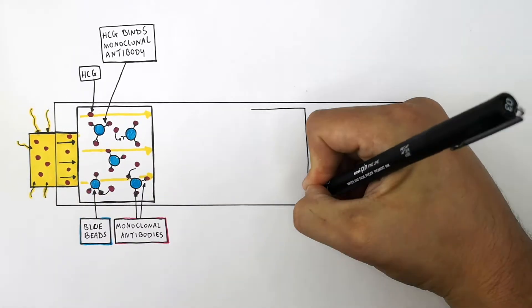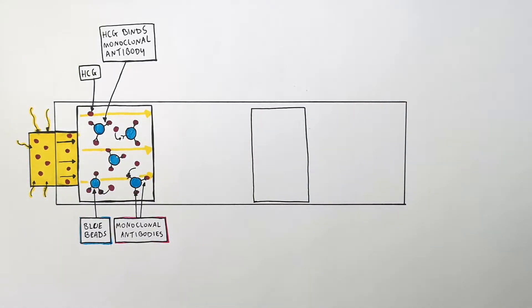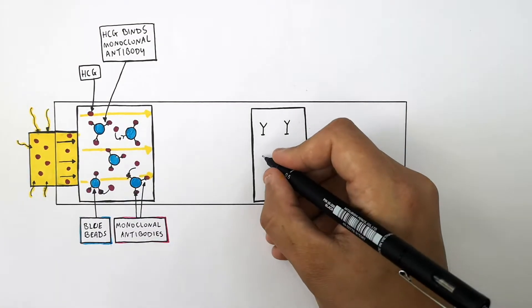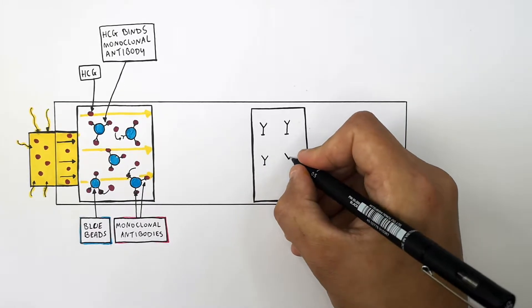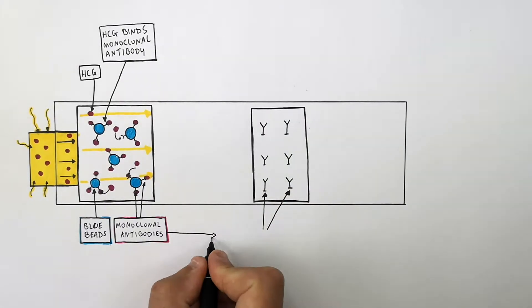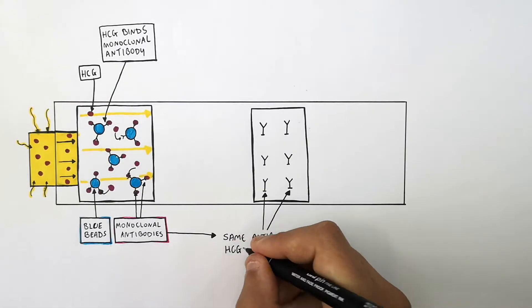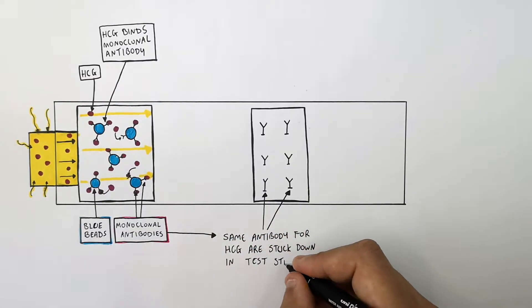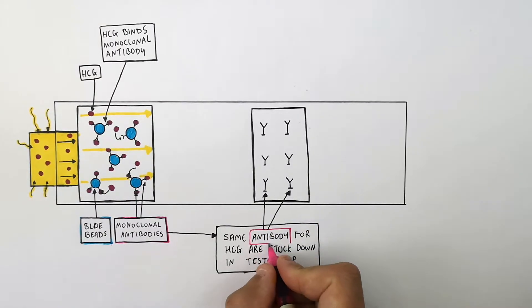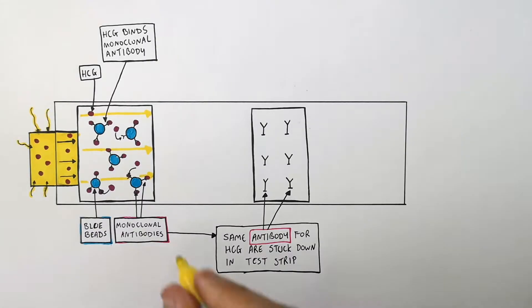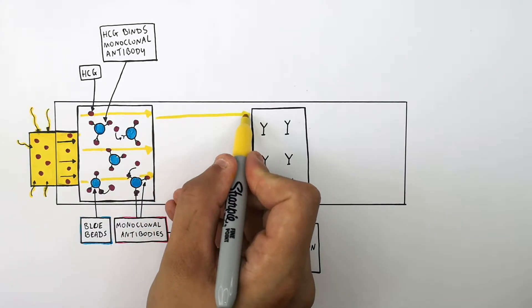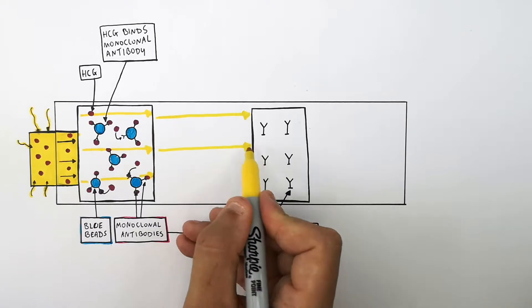The next part of the pregnancy test is the test strip. In the test strip are monoclonal antibodies also specific for HCG, but these are stuck down in the test strip. The urine — now containing the blue beads that have the monoclonal antibodies attached to them, with the HCG attached to those antibodies — moves along the pregnancy test toward the test strip.